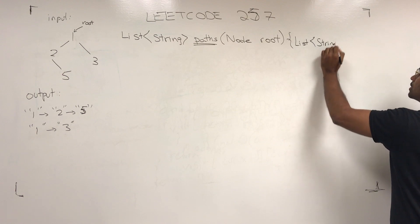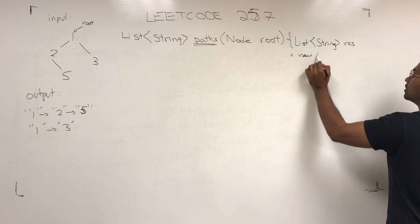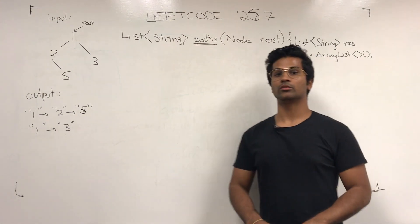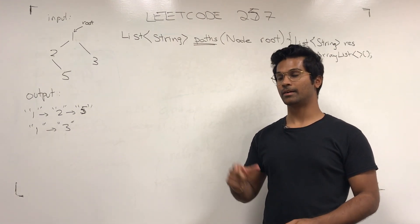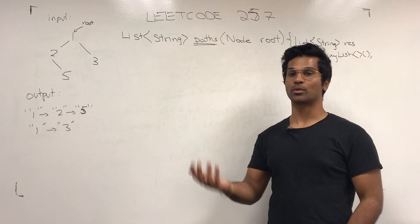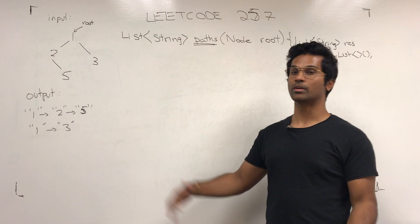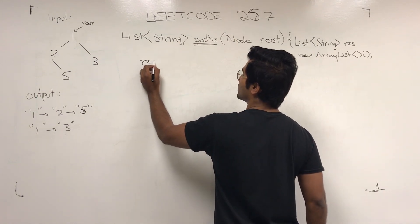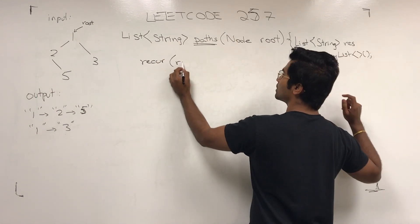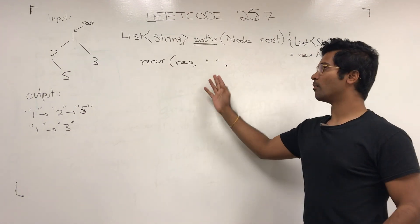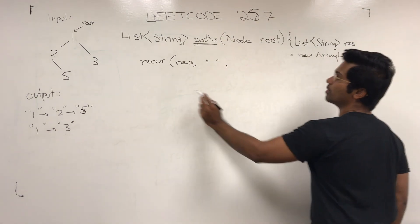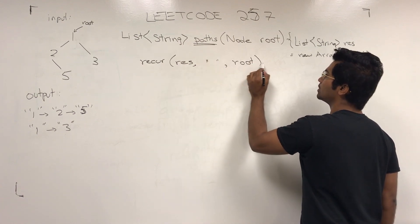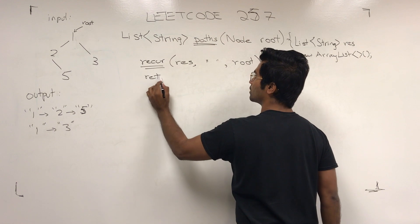List of strings result is a new ArrayList. This solution is actually from the LeetCode solution tab, and I'm going to be solving it in the same way. What I'm going to do is call a method called recur, pass in the result res, then pass in an empty string — that's saying that before the root there's nothing else — and we're going to pass in the root. This is going to be another method and we're going to return res.